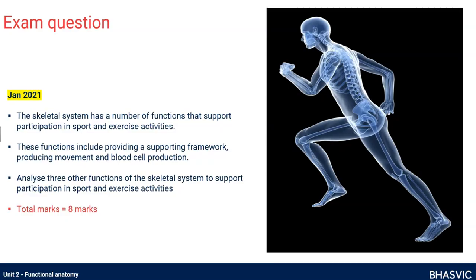This is important because it's not only useful in some of the big questions, but it's been an eight-marker, which is the biggest short answer question you can do. The eight-marker asked: the skeletal system has a number of functions that support participation in sports and exercise activities. These functions include providing a supporting framework, producing movement, and blood cell production. It gives you three of the six functions, and asks you to analyse the three others. You've got no wiggle room — you have to know all six.